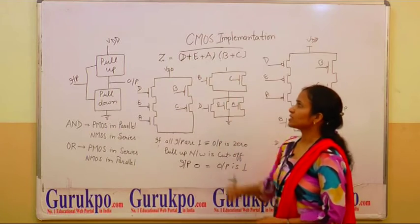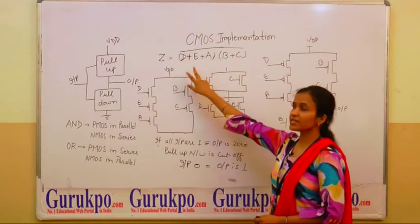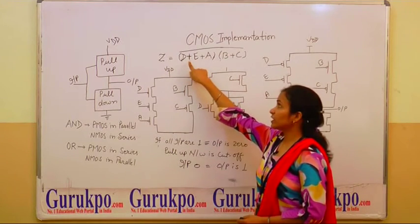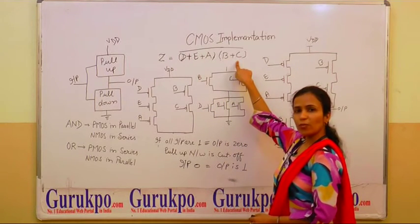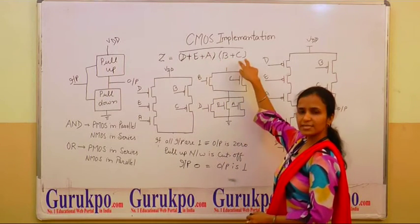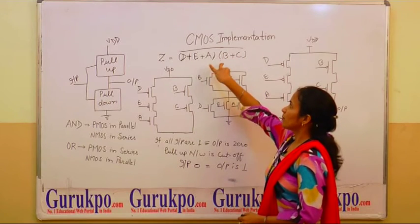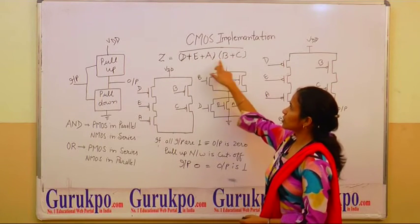Let us take an example of this equation: Z equals to (D+E+A) times (B+C). Here, this is the AND operation between D plus E plus A, and this is also an OR operation D plus C. Basically there is an AND operation between these two.